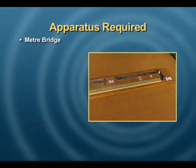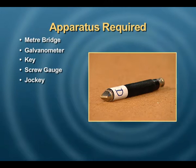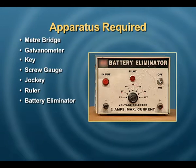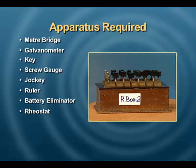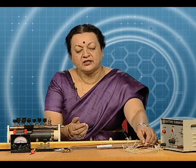Today, we are going to learn how to use a meter bridge to find the resistance of a wire and thereafter learn how to calculate the specific resistance of the material of the wire. The apparatus required includes a meter bridge, a galvanometer, a key, a screw gauge, a jockey, a suitable ruler, a battery eliminator, a rheostat, a resistance box, connecting wires, and a sample resistance wire for which we will find the resistance and calculate its specific resistance using the diameter of the wire.